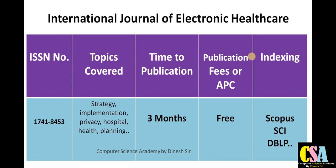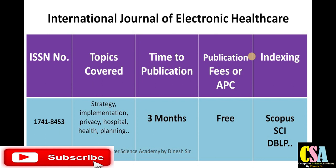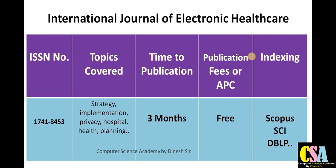Next is the International Journal of Electronics Healthcare, especially dedicated to electronics and healthcare students. Topics include strategy implementation, privacy, hospital health planning, and engineering. This journal covers social science, electronics, and multidisciplinary categories. Your research paper will get published within three months. Indexing includes SCI, Scopus, and DBLP, with no publication charges.